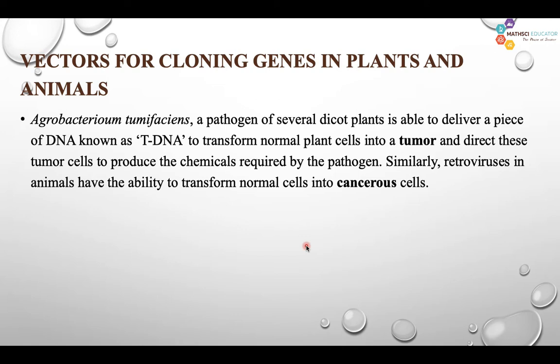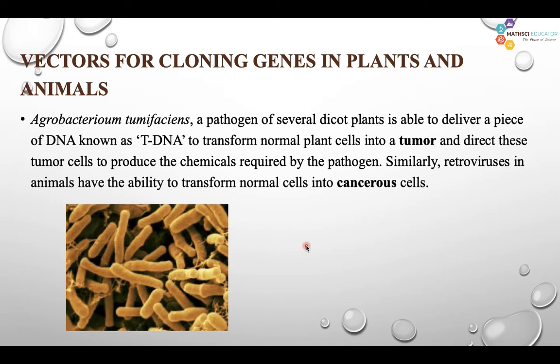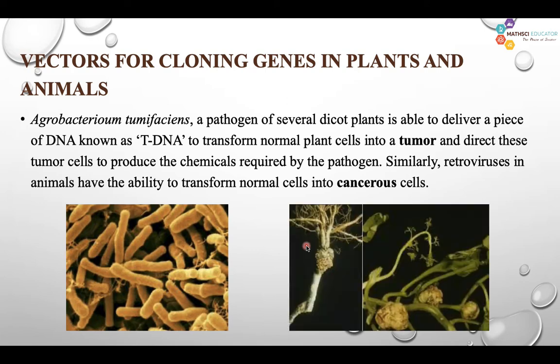For that, Agrobacterium tumefaciens, a pathogen of several dicot plants, is able to deliver a piece of DNA known as T-DNA, which transforms a normal plant cell into a tumor cell. Agrobacterium tumefaciens is one type of pathogen for several dicot plants, and because it delivers its DNA known as T-DNA, it converts a normal plant cell into a tumor cell. It also directs this tumor cell to produce chemicals required by the pathogen.